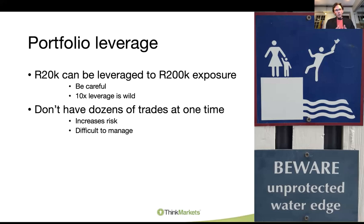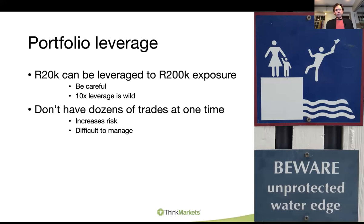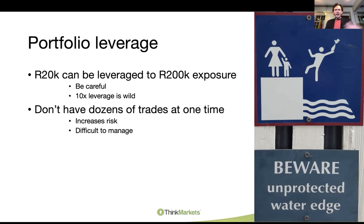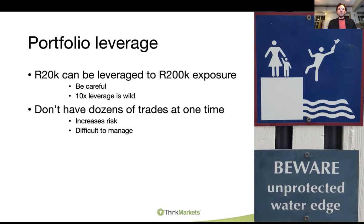My view is to stick to three open trades at any one point — perhaps one equity, one currency, and one commodity. Having different asset classes is quite cunning because they respond to different market movements. During March, everything correlated to one and everything fell — gold, Bitcoin, bonds, commodities, everything. But in normal circumstances, on any given day you'll see currencies going one way, commodities another, some equities up and some down. So three trades across different asset classes works well.